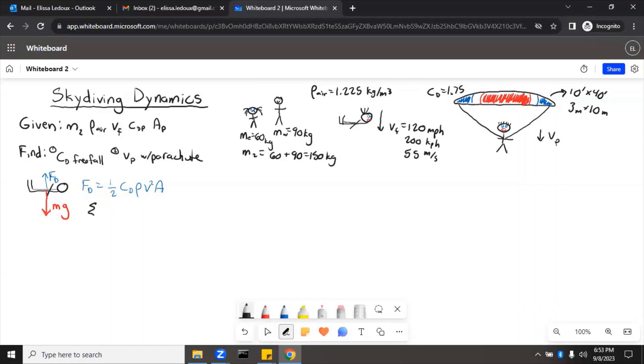So we'll say that sum of the forces in the y direction equals zero, and the drag force equals mg. So drag force going up, weight going down. So this is going to be one half density of air, CD, V final squared, times A. Well, we don't actually know the area of the person, but we can estimate.